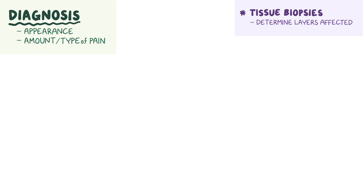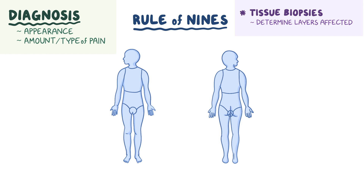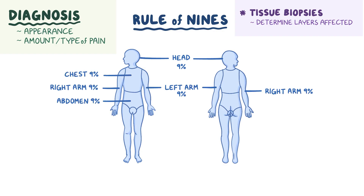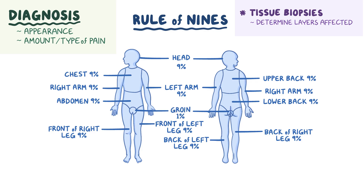In adults, the severity of burns is calculated using the rule of nines. The rule of nines evaluates several distinct sections of the body's total surface area for the presence and degree of burns. Eleven of the sections each make up 9% of the body's surface area and are the head, right arm, left arm, chest, abdomen, upper back, lower back, the front of the left leg and the back of the left leg, and the same for the right leg. A final section, the groin, accounts for the missing 1% of the body's surface area.